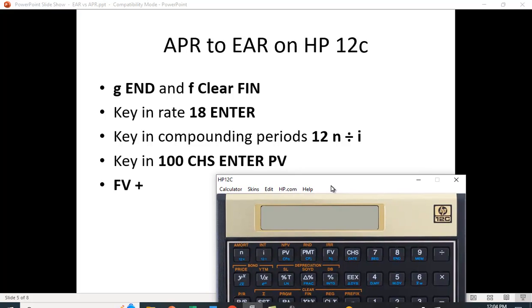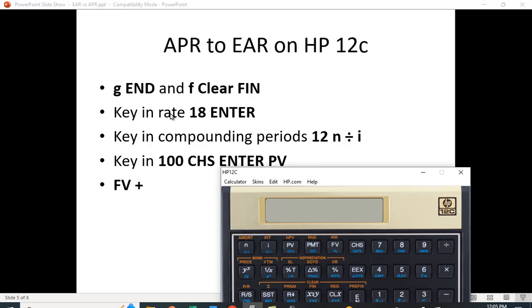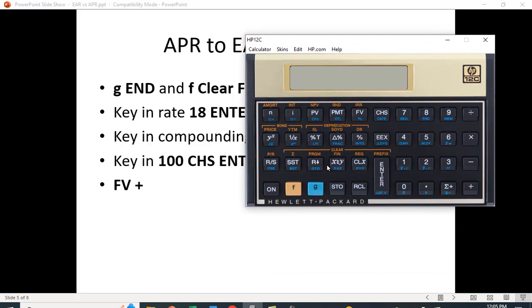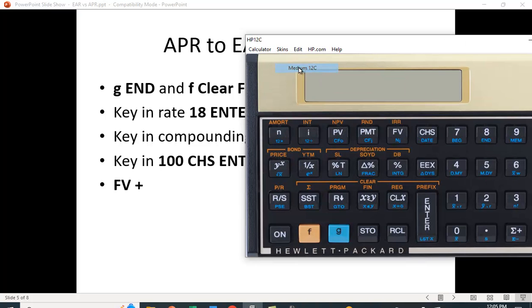What we're going to do here is go through the process. When you hit the G key, that gets these blue keys down here. Actually, let me make the skin a little bigger. So when you hit the G key, you get these blue keys. When you hit the F key, you get these orange keys. So they want you to hit G and END is over the 8, and then they want you to clear the financial function, so F key and then CLEAR FIN right here clears all the financial functions.